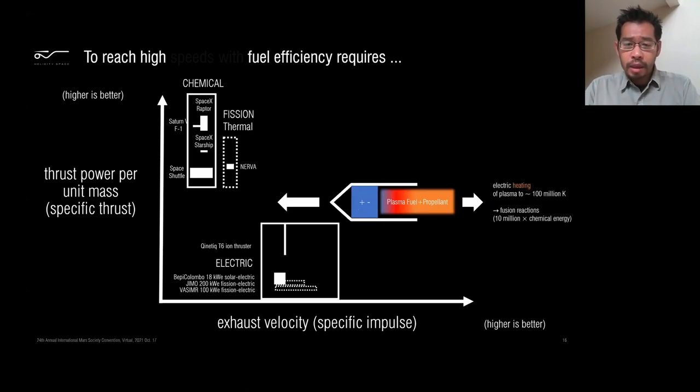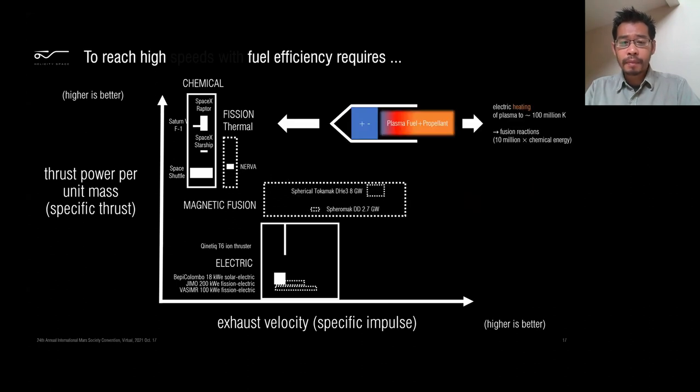Another option is to take the electricity on board, and instead of accelerating the plasma, you want to heat the plasma. You heat the plasma now to 100 million degrees. At that kind of temperature, anything above 10 million degrees, you start to get fusion reactions. That releases 10 million times more energy than chemical energy, so you can do something interesting with that and really accelerate the plasma out the back at very high velocities.